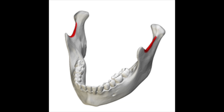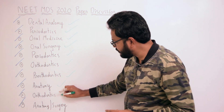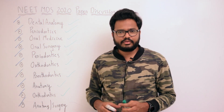The upper border of the ramus is thin and is bounded anteriorly by the coronoid process and posteriorly by the condylar process. The area between the coronoid and condylar processes has a deep concavity which is called the mandibular notch or sigmoid notch. Now let's move to the penultimate topic — orthodontics first order, second order, and third order bends.